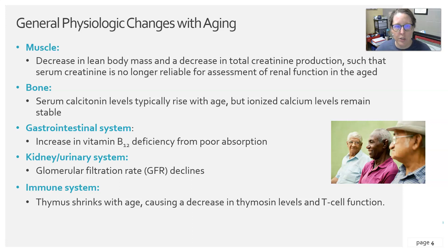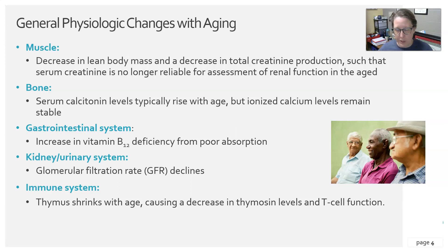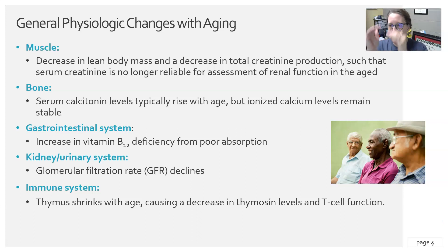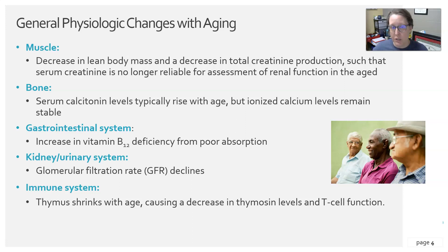Some general physiological changes associated with aging: in muscle, there is a decrease in lean body mass and a decrease in total creatinine production, such that serum creatinine is no longer a reliable measure of renal function. The elderly lose muscle mass, causing creatinine levels to drop, but renal function also declines, causing creatinine to increase. These two changes cancel each other out, masking the true loss of muscle mass and renal function.